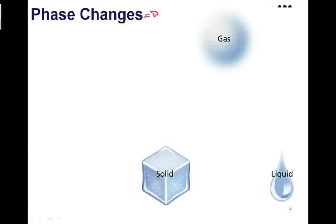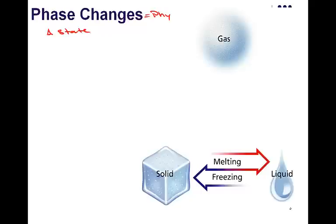Phase changes are also physical changes. This is a change in the state of matter and our three states of matter, like we talked about earlier, is solids, liquids, and gases. If we move between a solid and a liquid, our two phase changes are called melting and freezing.